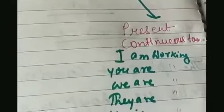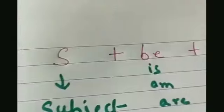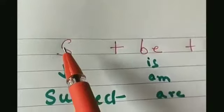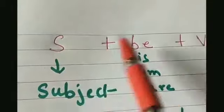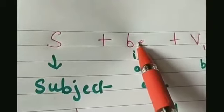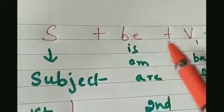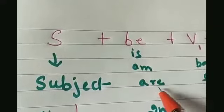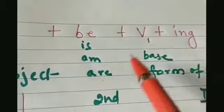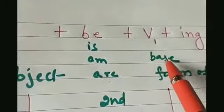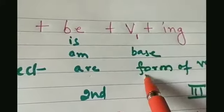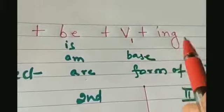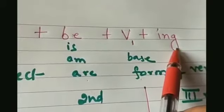Now let's see the structure of present continuous tense. The structure is: Subject + Be verb (is, am, or are) + base form of verb (V1) + ing form.